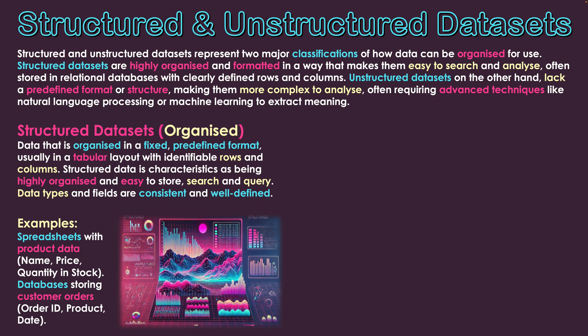Examples of structured data include spreadsheets, such as product data with field headings like name, price, and quantity of stock — where we can apply all our analysis with formulas and graphs. Databases for storing customer orders are another example, with fields such as order IDs, products being ordered, the dates orders were made, and the dates they should arrive. Both spreadsheet and database formats are in that tabular layout with field headings at the top and each record as a different row. These are our structured data sets — our organized ones.